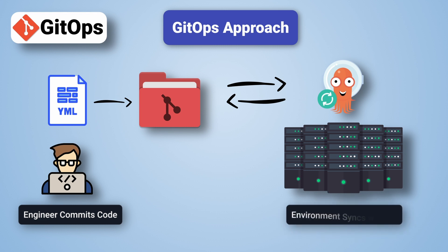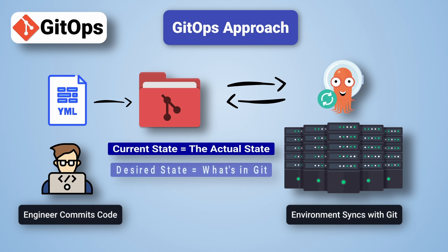This process is known as reconciliation. The operators constantly check the current state of the environment and match it to the desired state, which is defined in Git. Although this small change of having your environments automatically sync to what's defined in Git may not sound like much, it is an absolute game changer and organizations are scrambling to implement it.